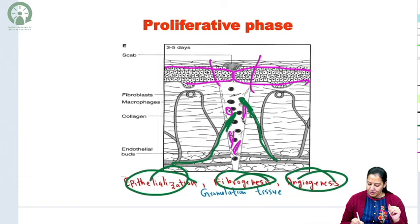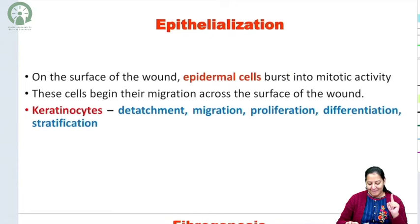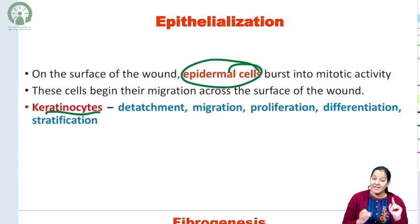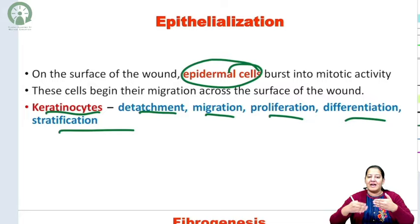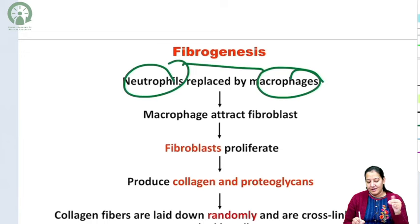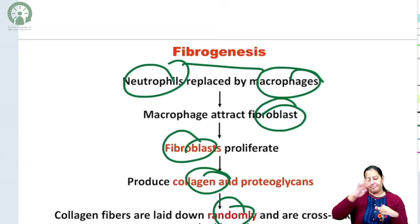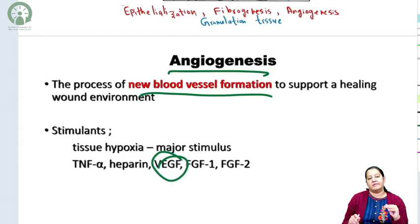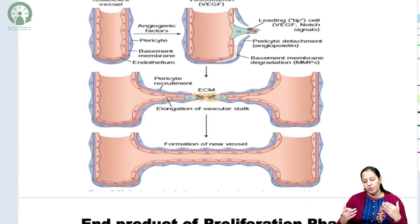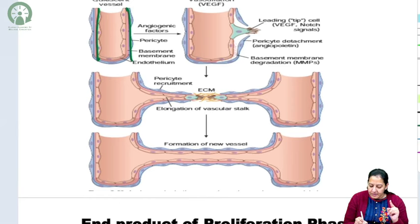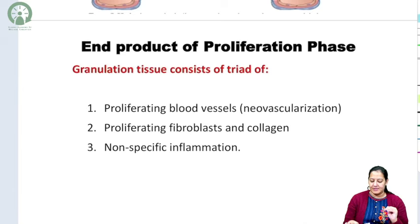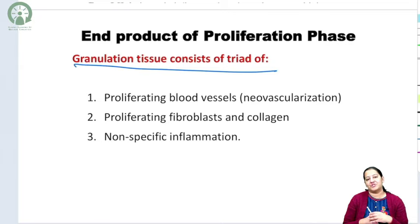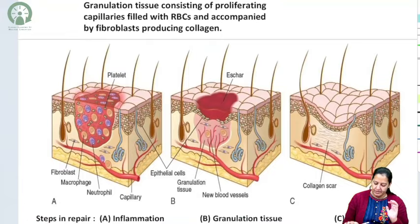The end result of all three processes — epithelialization, fibrogenesis, and angiogenesis — is granulation tissue. You can see in the diagram that granulation tissue has now formed in the previously injured area. That is the end product of phase two, the proliferative phase.